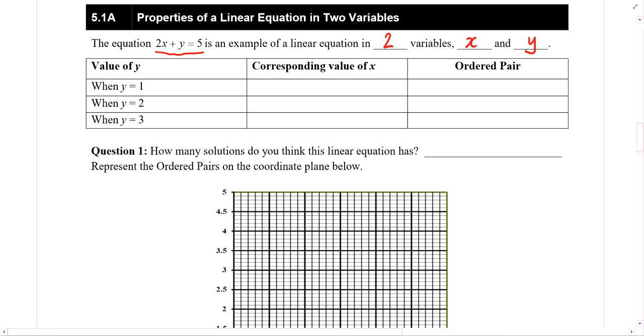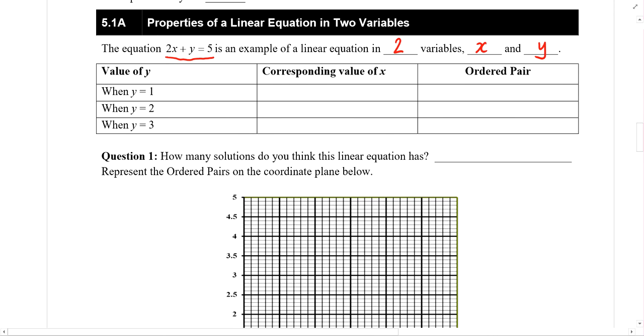So for example, when y is equals to 1, what is the corresponding value of x? So to do that, we need to have some working. So let me just do it at the side. When y is equals to 1, we have 2x plus 1 equals to 5. So 2x must be equals to 4 and x equals to 2. So this is the corresponding value of x. Now we have an ordered pair. Write down the x coordinate first, which is 2, and the y coordinate, which is 1.